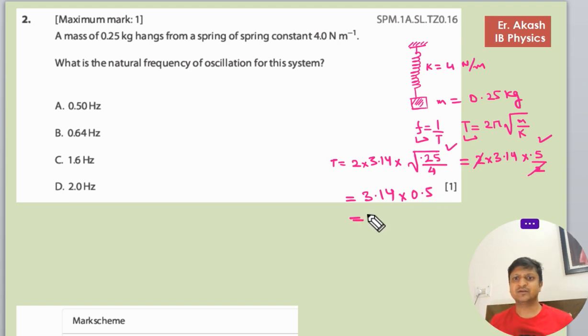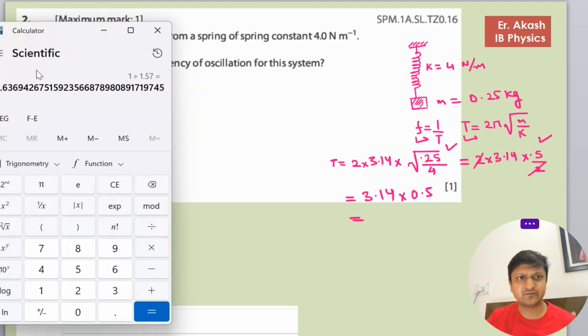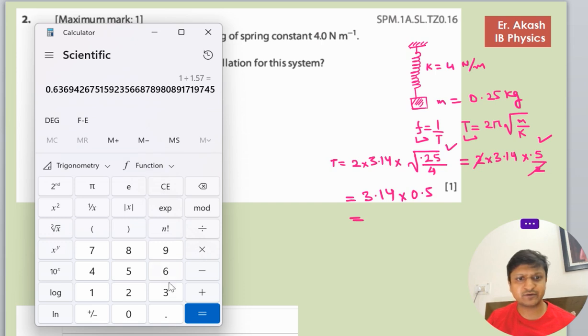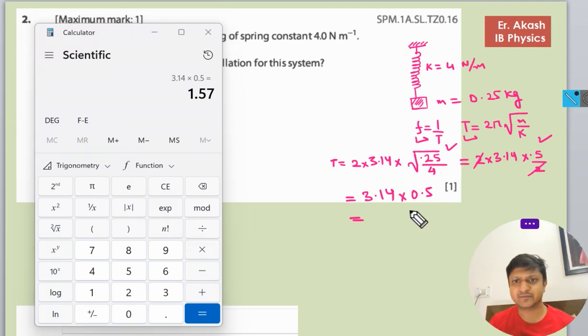This becomes 3.14 into 0.5. We'll use the calculator here if your exam allows it, or multiply by yourself. Using a calculator, it becomes 1.57. So this is T.